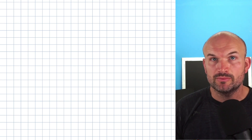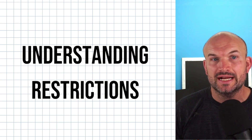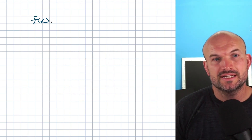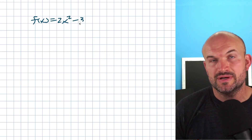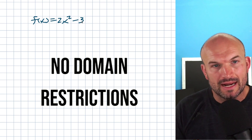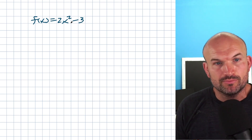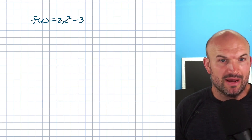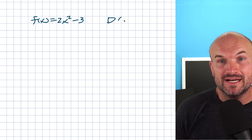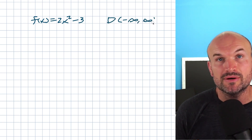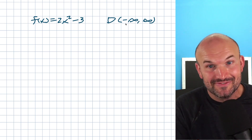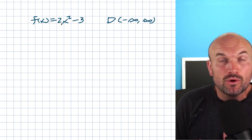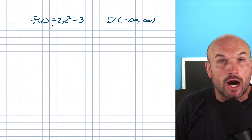One thing that's really important to understand about the domain is understanding restrictions. When we have an equation like f(x) = 2x² - 3, there are no restrictions on the domain. No matter what number you plug in for x, you're always going to be able to square it, multiply by 2, and subtract by 3. That's why the domain here is going to be all real numbers — any number from negative infinity all the way to positive infinity can be plugged into this function and you will get an output value.